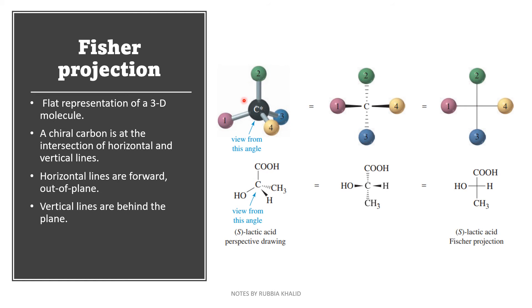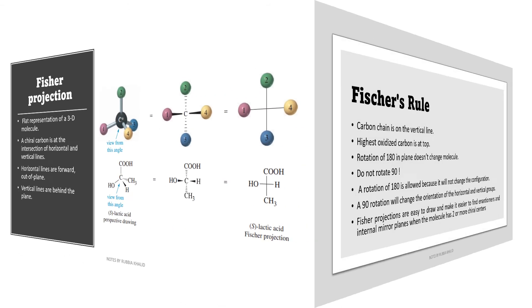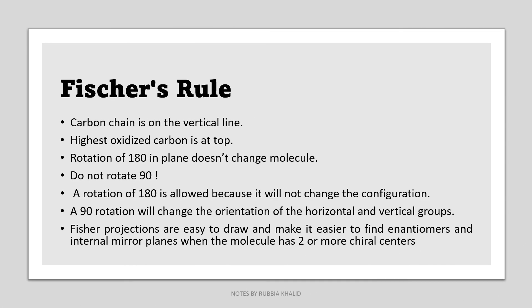And here, first drawing is a perspective drawing. Next, we have Fischer's rule. Carbon chain is on the vertical line. Highest oxidized carbon is at the top. Rotation of 180 degree in the plane does not change molecule. Do not rotate 90 degree. A rotation of 180 is allowed because it will not change the configuration. A 90 degree rotation will change the orientation of horizontal and vertical groups. Fischer projections are easy to draw and make it easier to find enantiomers and internal mirror planes when the molecule has two or more chiral centers.